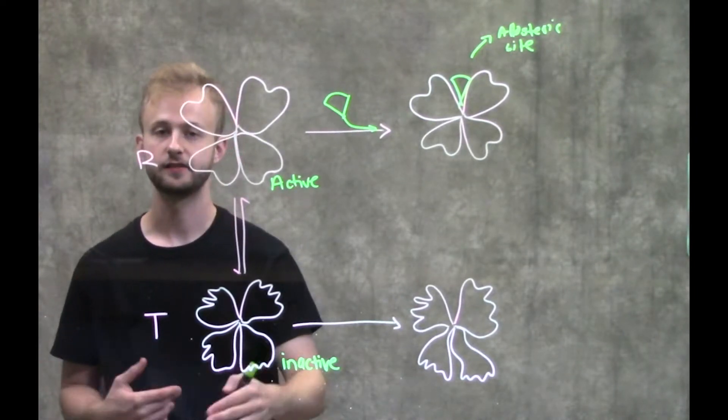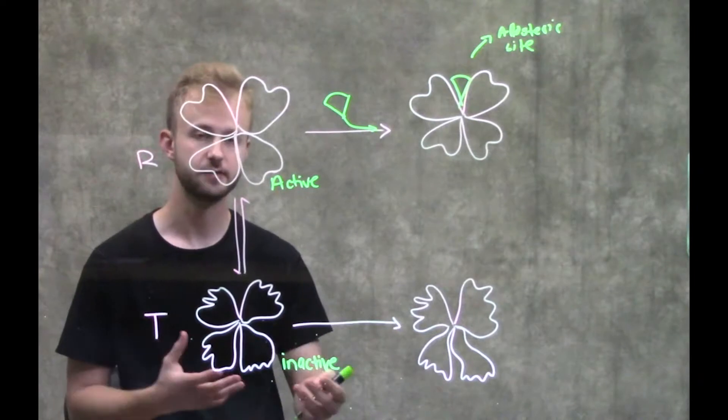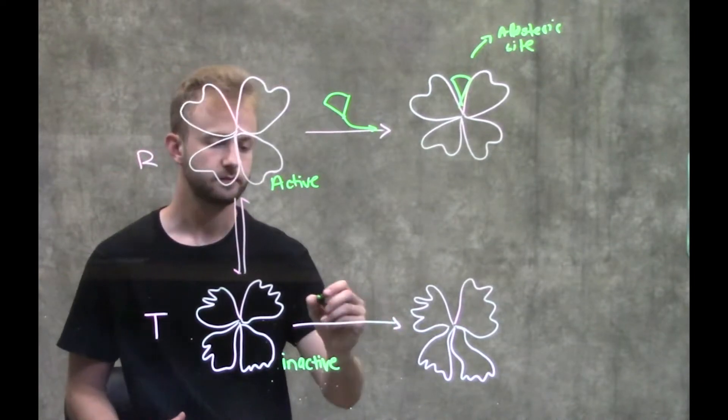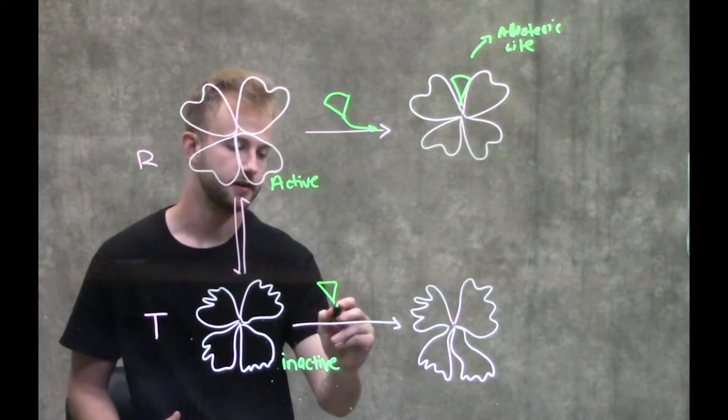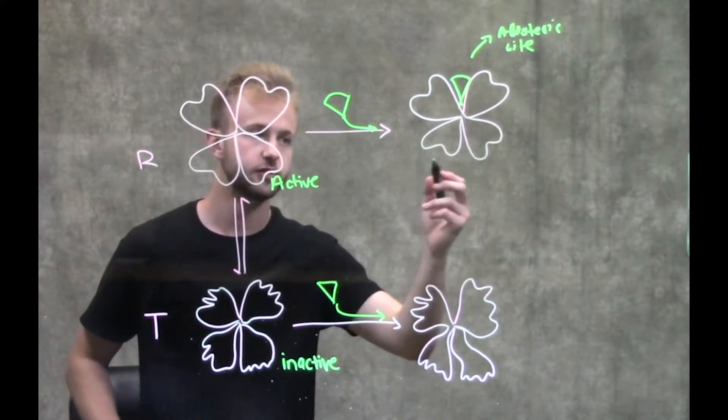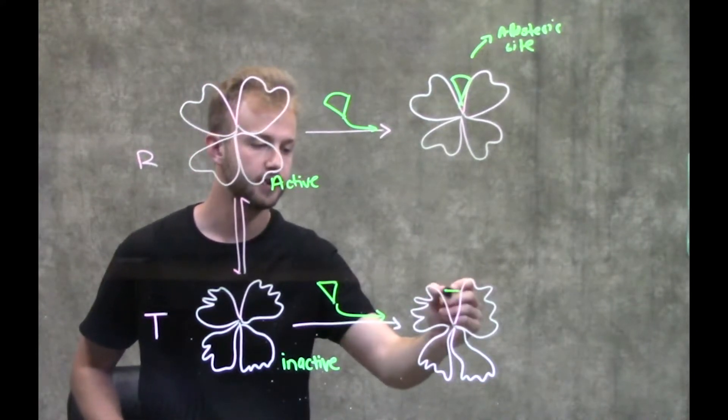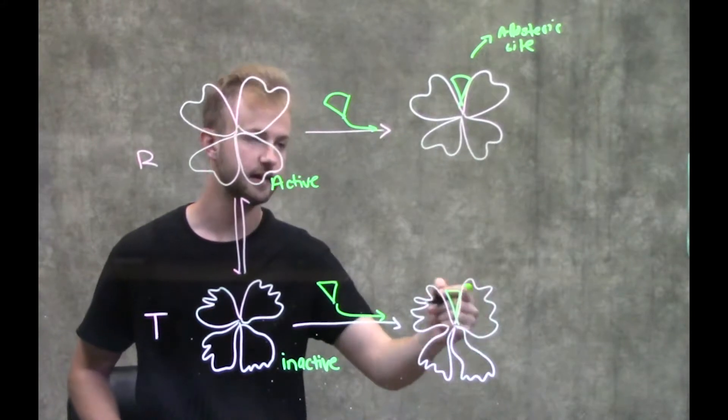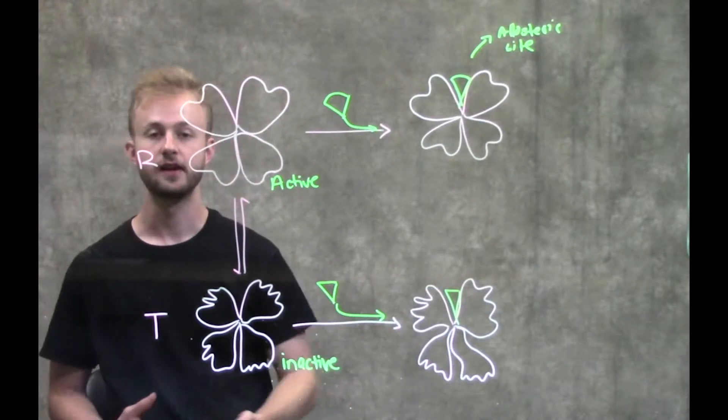A similar thing happens with allosteric inactivation or inhibition, but it does the opposite. Instead of binding to the allosteric site and activating it, it's going to bind to the allosteric site and inhibit it.